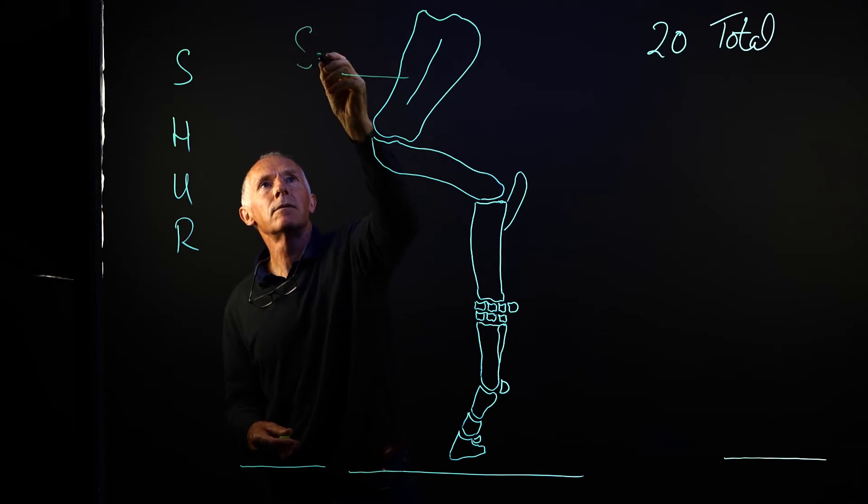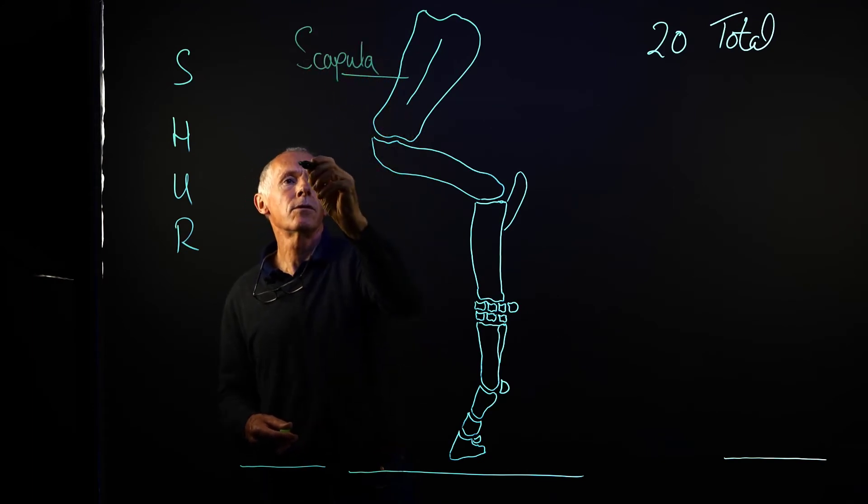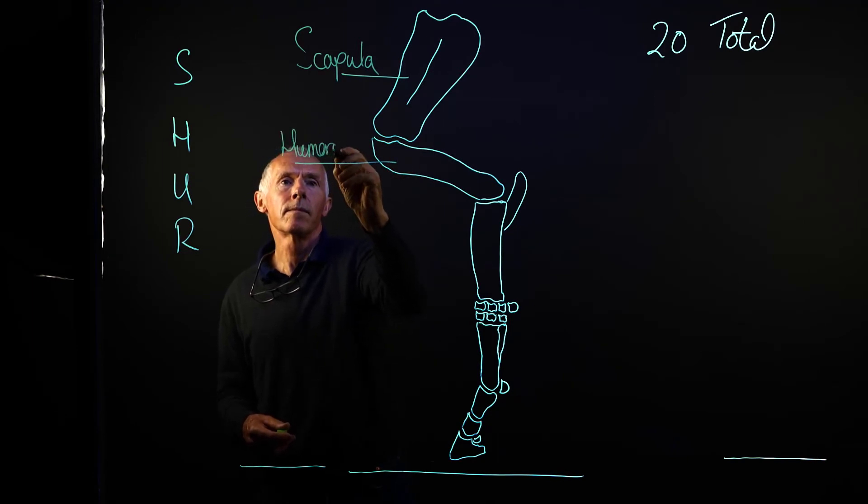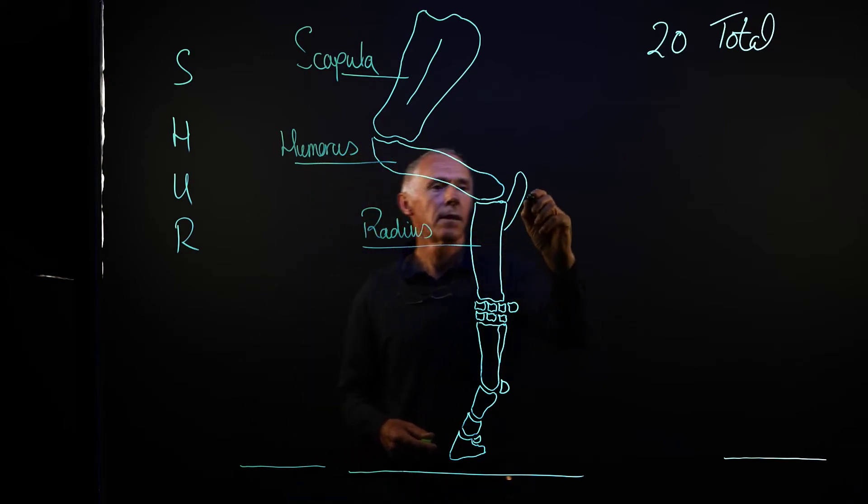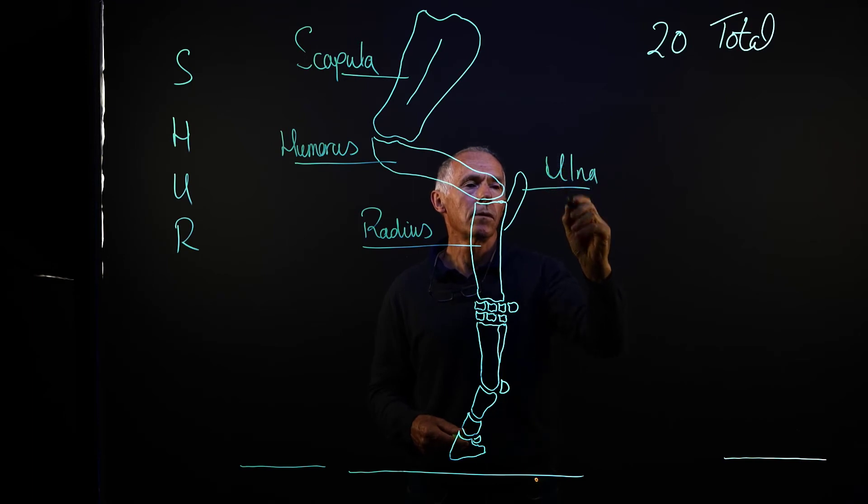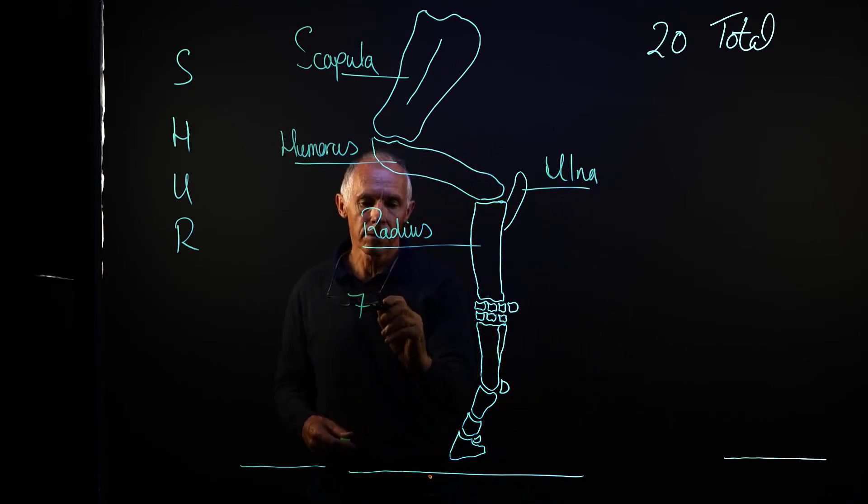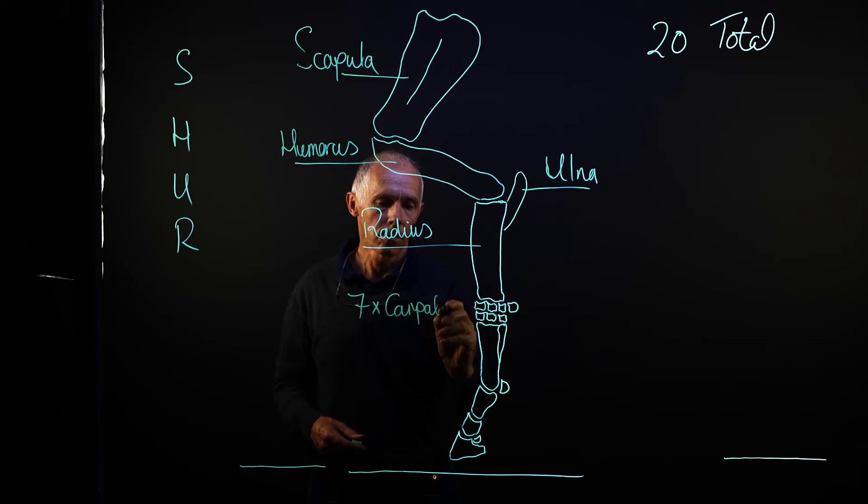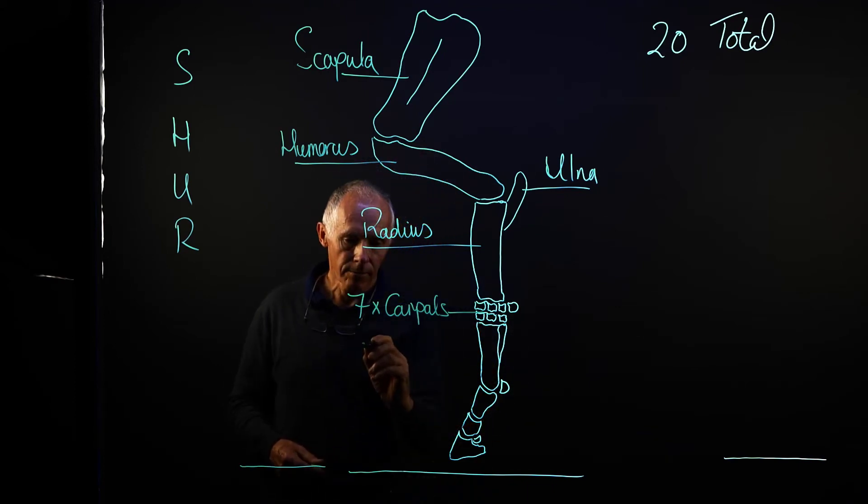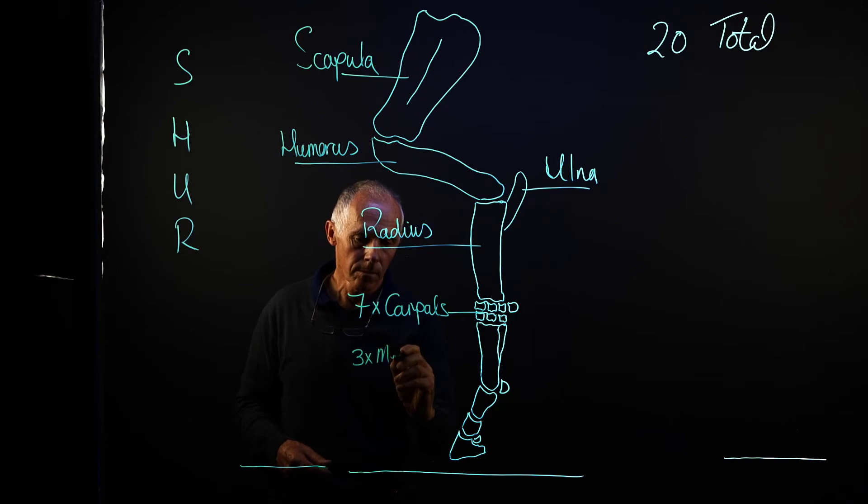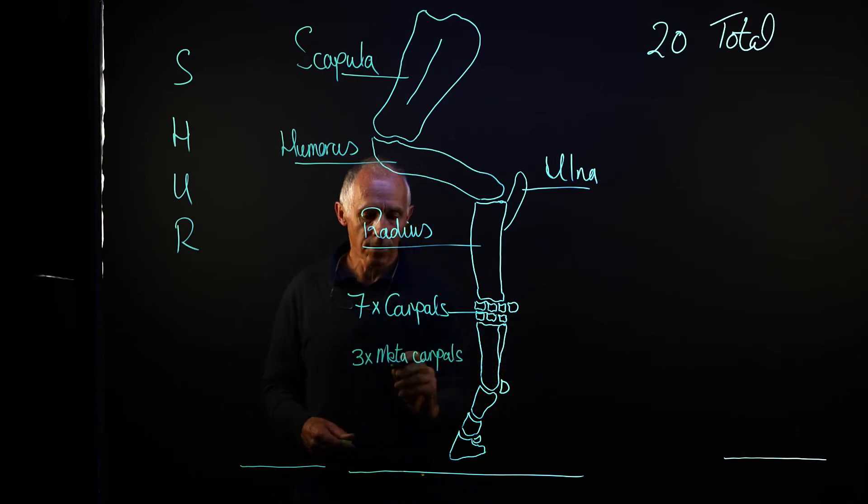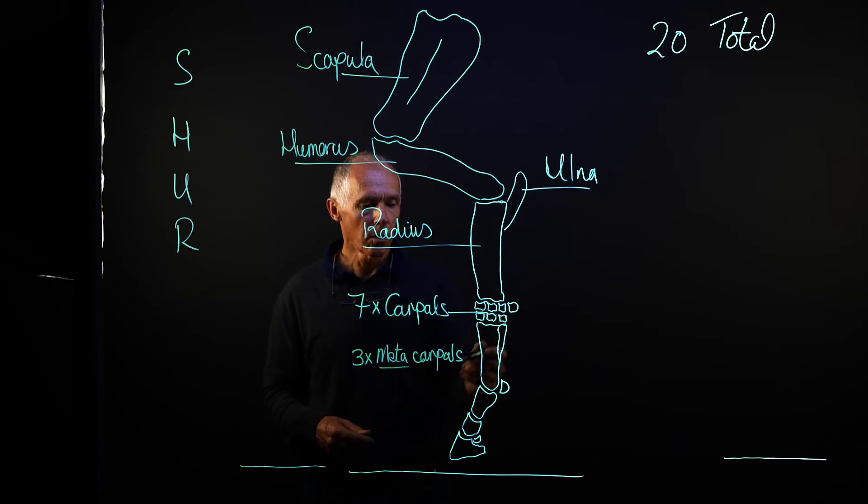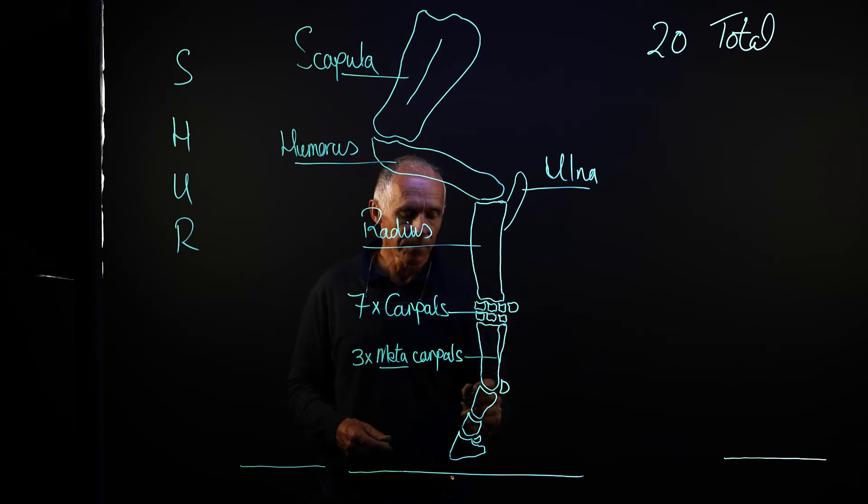We have the scapula, the humerus, the radius and the ulna. Below that we have seven carpals. Sometimes there will be an additional one, and we have three metacarpals. These are called metacarpals because meta means beyond in this case. So the bones that are directly beyond the carpal joint or knee of the horse are called the metacarpals, and there are three of them: the cannon bone and the two splint bones.